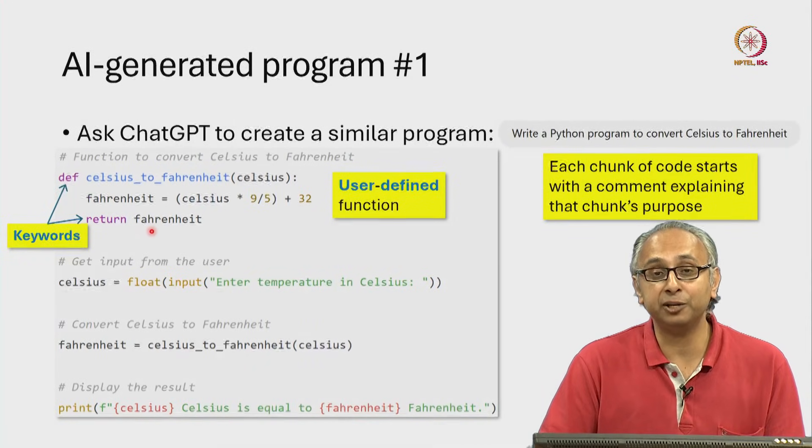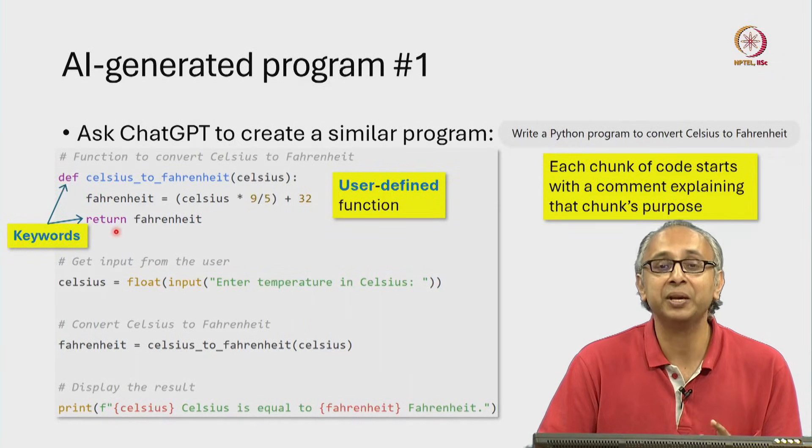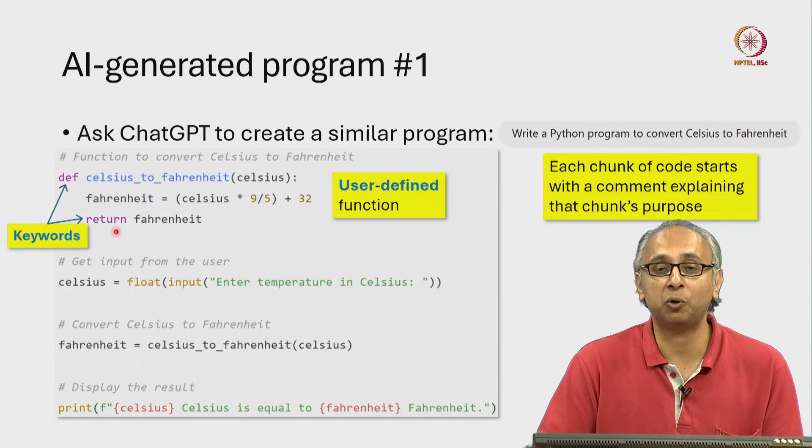And once again, you cannot have a variable called return. Notice on the next line, the AI generated code uses nested function calls.